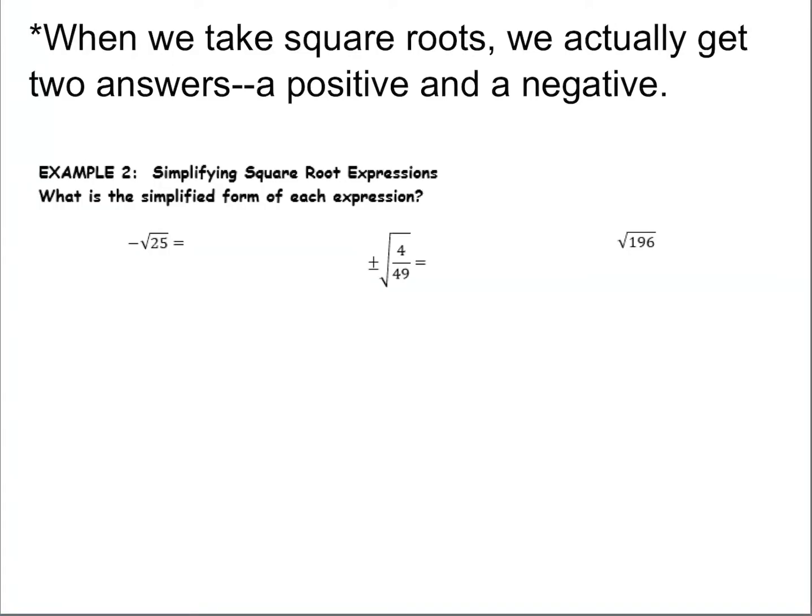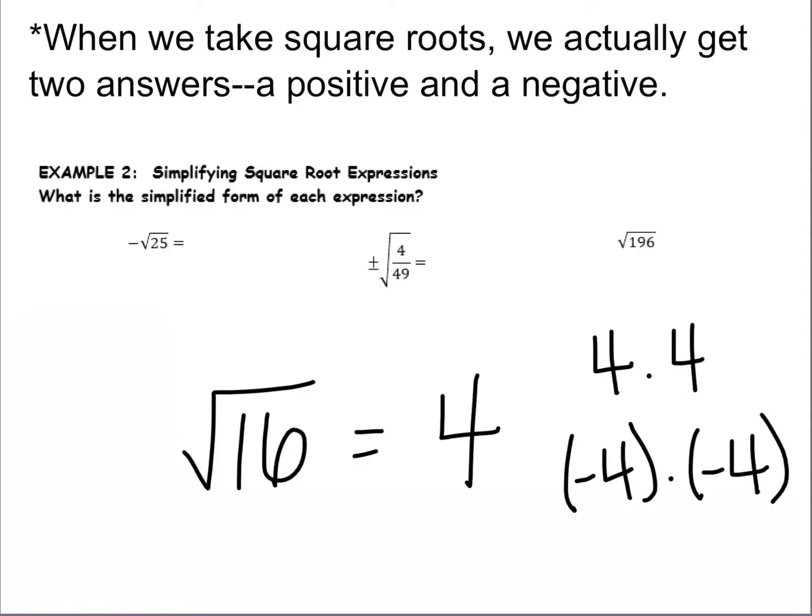When we take square roots, we actually get two answers, a positive and a negative. Because of the simple fact that I would be multiplying two numbers with the same sign. The square root of 16, for example, we would normally say 4 because positive 4 times positive 4 gives us 16. But negative 4 times negative 4 also gives us 16. So we could say that our answer is positive and negative 4. That's what they're looking for.